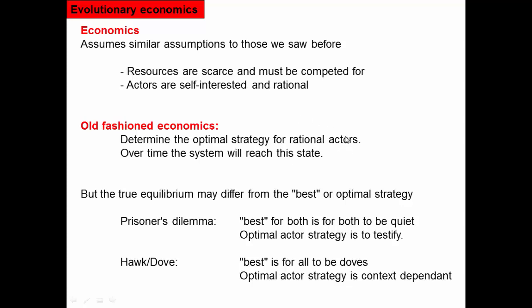The idea is: figure out what would be best for everybody in society economically, and then assume everybody will just do that because it makes the most sense. But as we saw, the true equilibrium can differ from that best or optimum strategy. In the Prisoner's Dilemma, the best for everybody was for both to be quiet, but the optimum strategy for each individual actor was to testify — so you would never actually expect a population to reach the better state.